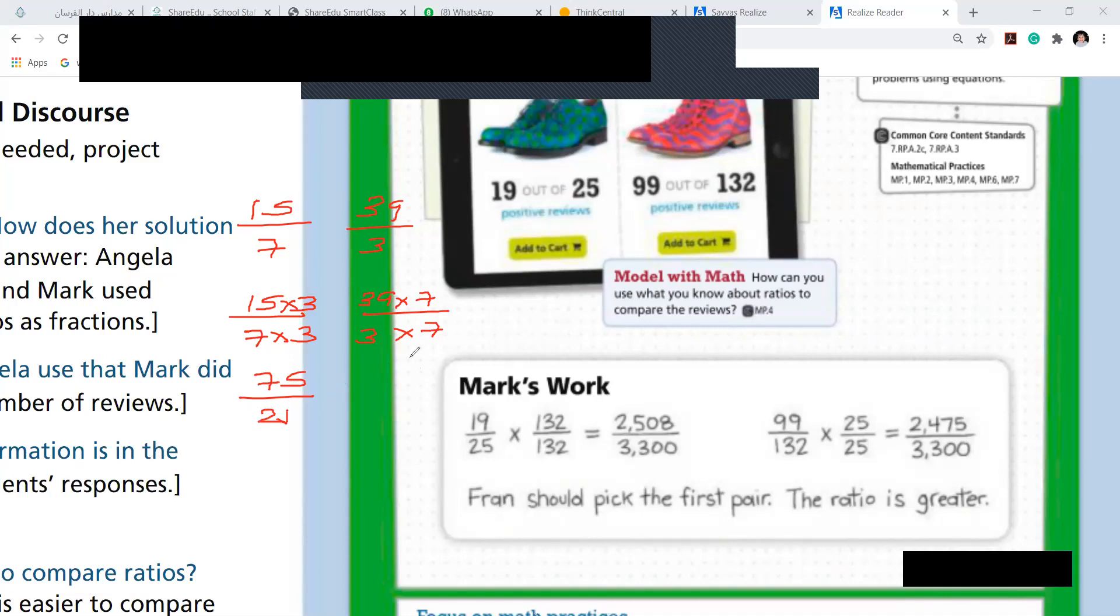And 39 times 7... I don't know. 7 times 9 is 63, so 273 over 21. So this one is greater. You understood the concept, right?